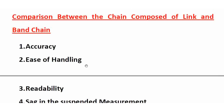First, accuracy: the steel band is 20 times more accurate than the metric chain. So for accurate work, you should use the band chain or steel band. Second, ease of handling: the band chain is lightweight, so it can be easily handled compared to the metric chain.